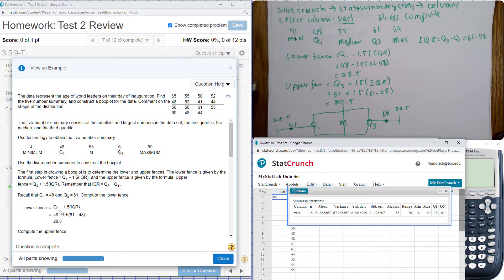So we can do our lower fence. It's Q1 minus 1.5 times IQR, and this gives us the lower fence of 28.